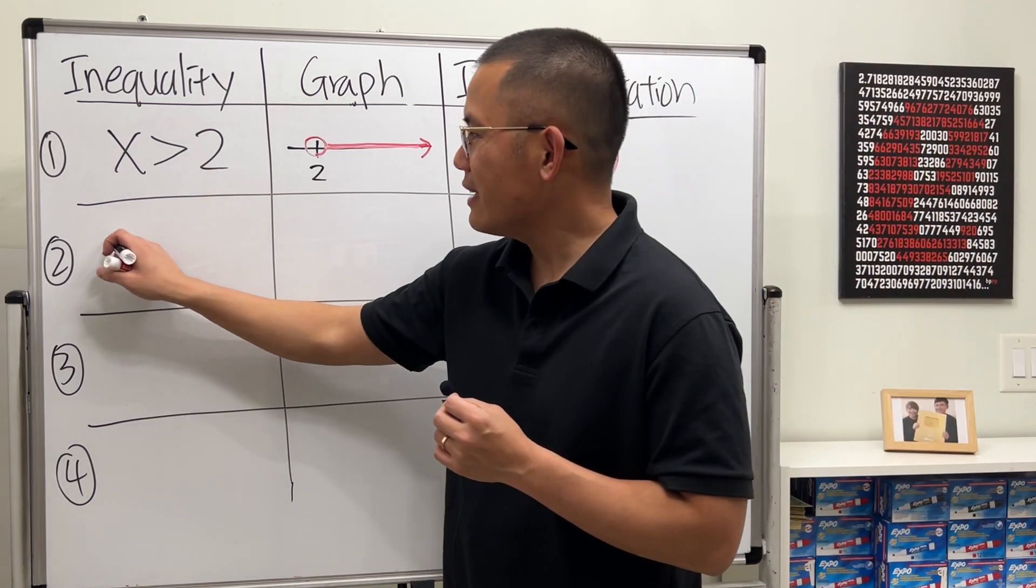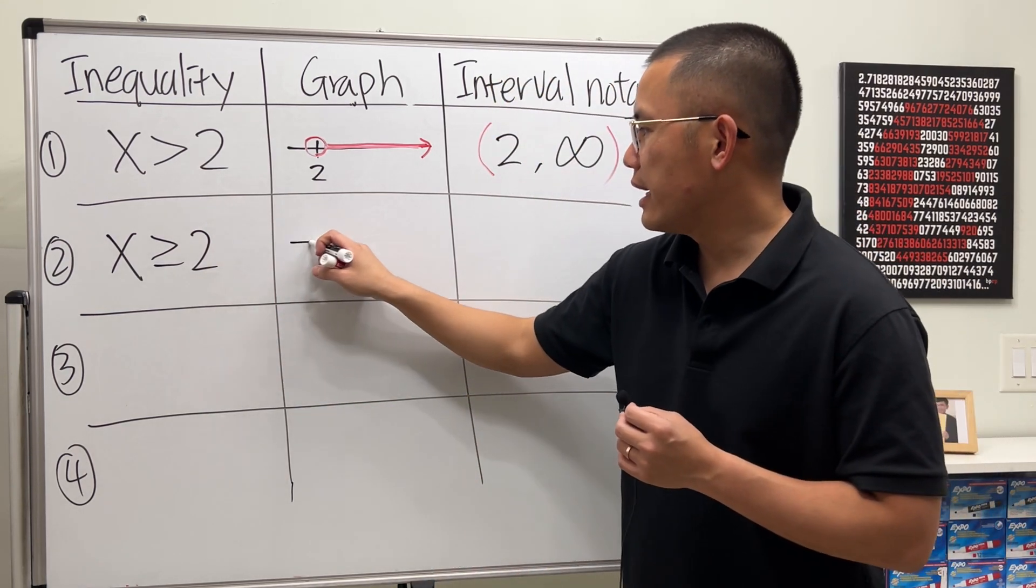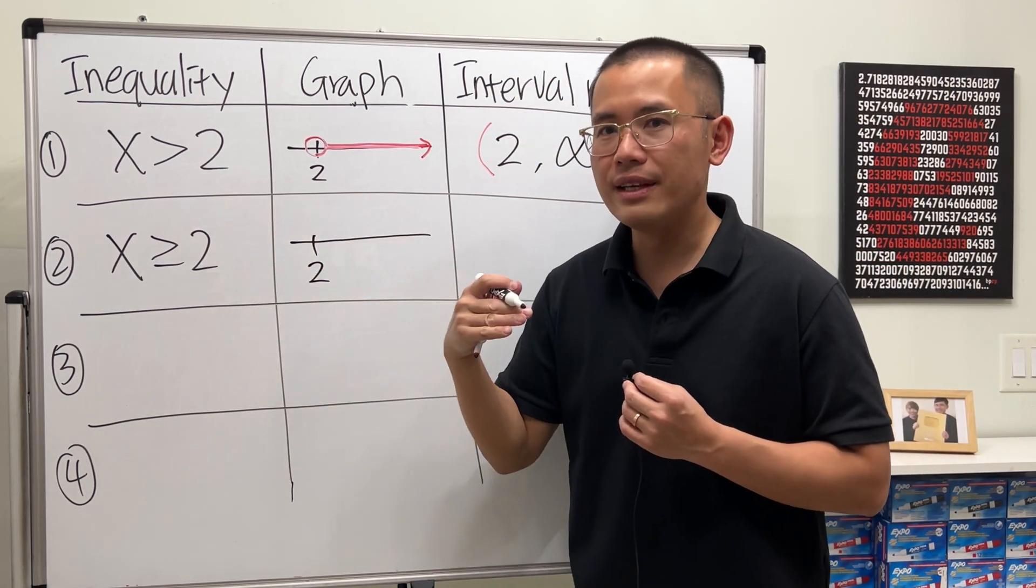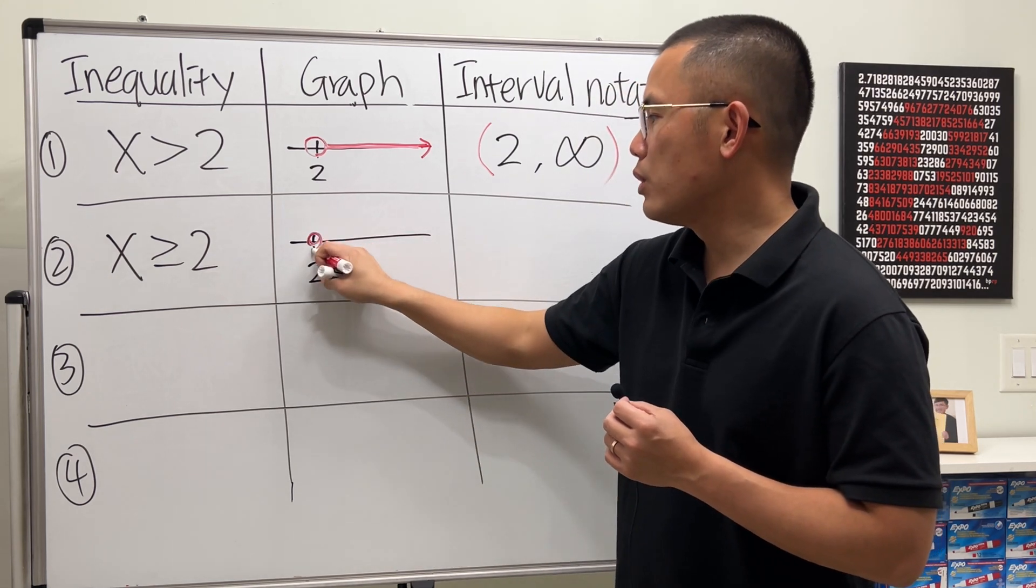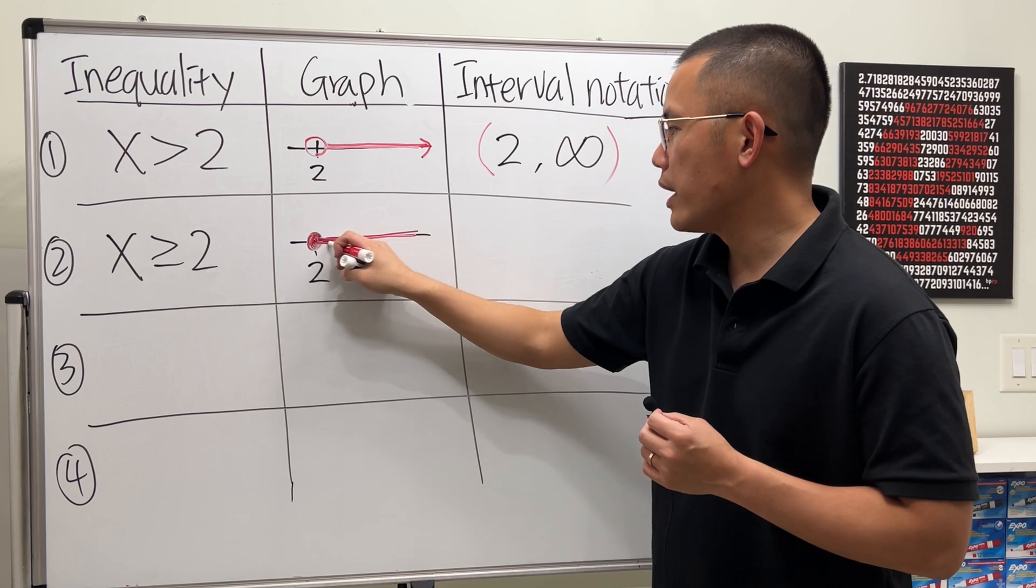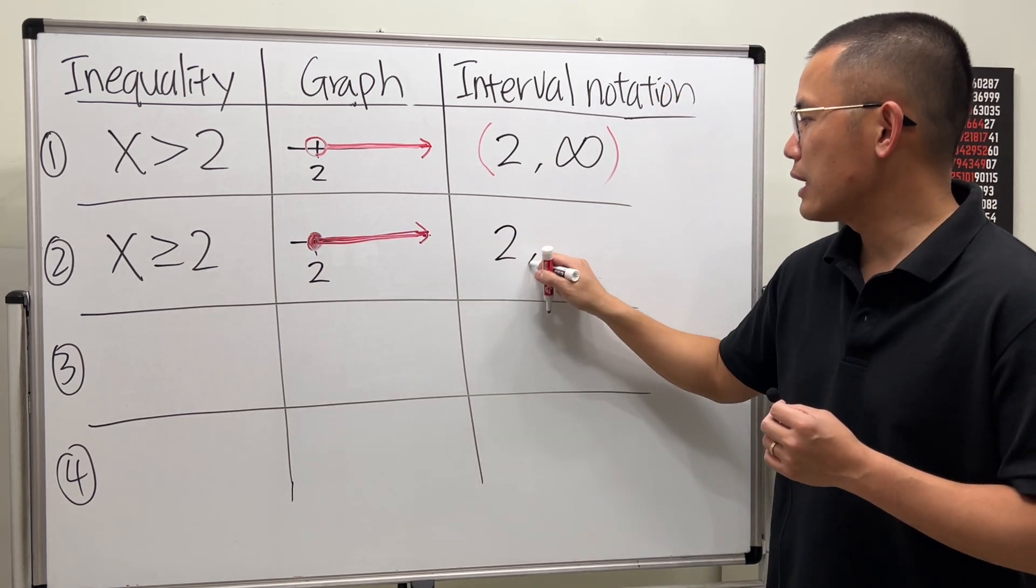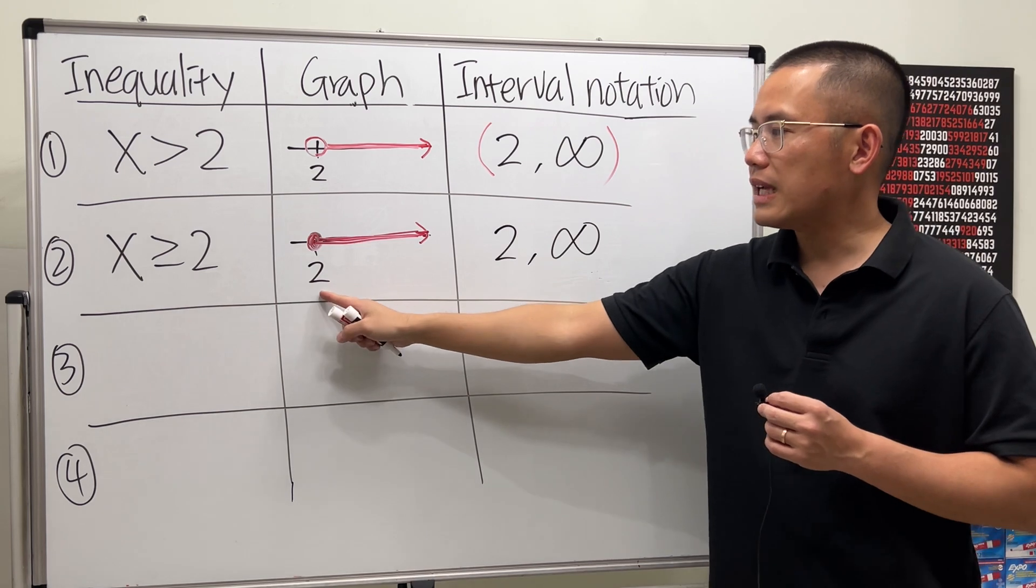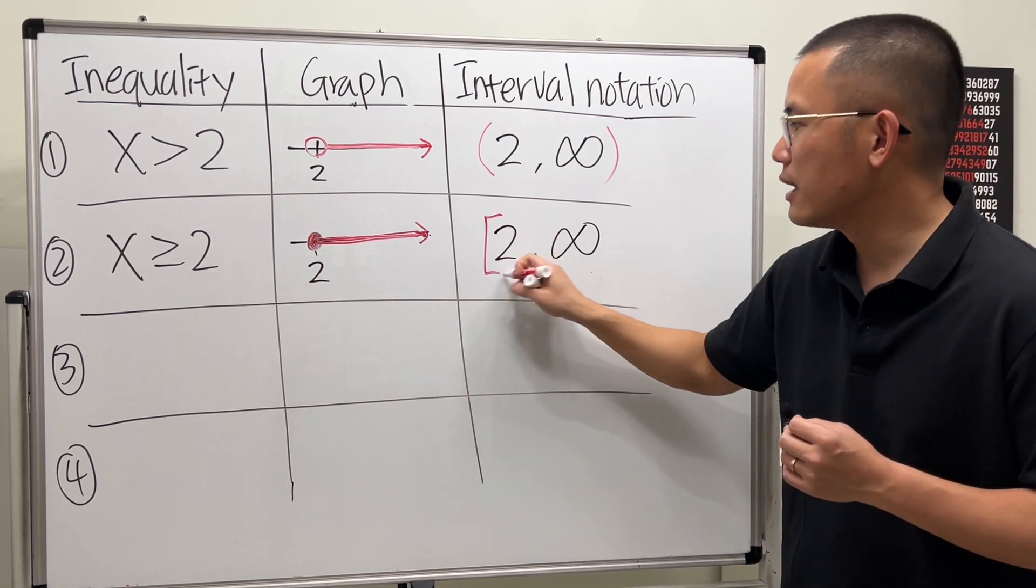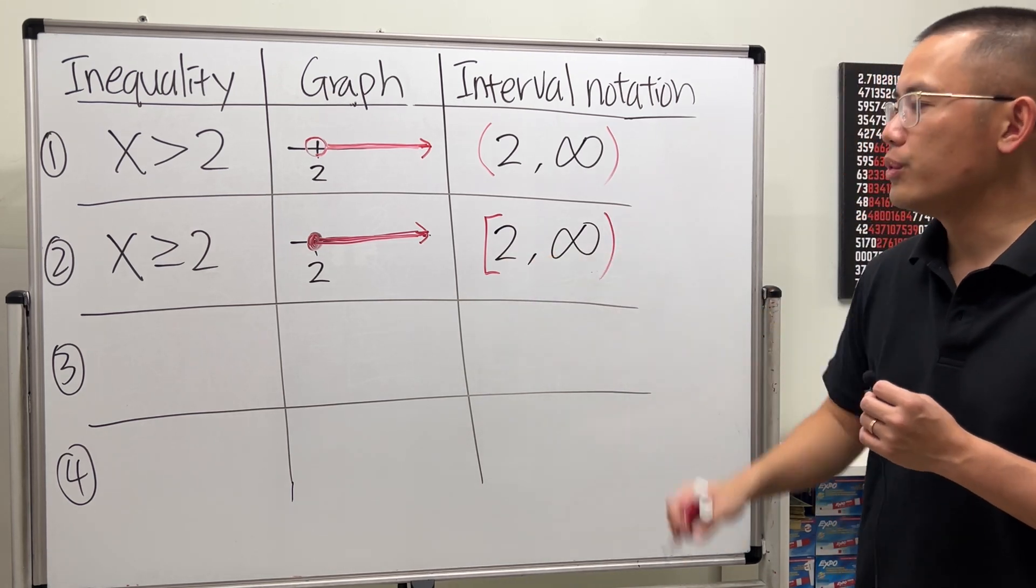Now, on the other hand, if we have x is greater than or equal to 2. Again, it will be a number line. Here is 2. But since this time we have the equal sign, so it will be a closed circle. And then we still go all the way to the right. So we still have 2 comma infinity. But this time, the 2 is included. We will be using the square bracket like this. So 2 comma infinity. Again, you never include infinity.